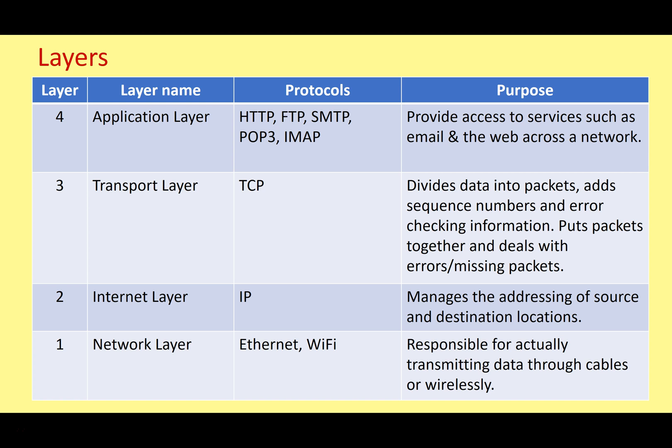At the top we've got the application layer. This is the top layer, close to the user — these are the things we're using when we use networks and the internet. It's the software and services we're using, like our web browsers or email clients. This includes protocols like HTTP, FTP, SMTP, POP3, and IMAP4 — all the services that we're using on the internet.